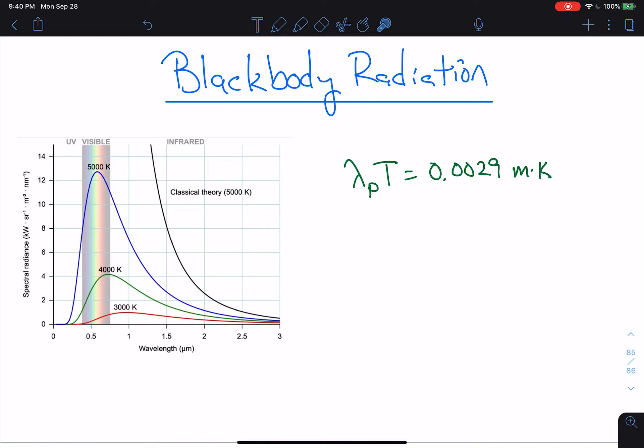So certainly, you can look at stars. You can determine what the peak wavelength is, plug it into this formula, and you'll get an excellent approximation for the temperature of that star, at least the surface temperature. You can also use this for people. So, for example, let me do that right now.